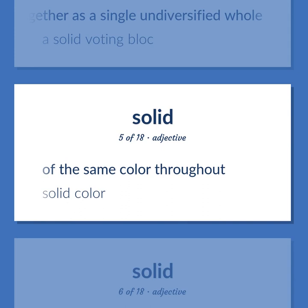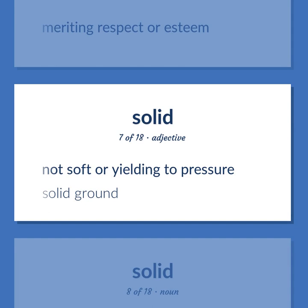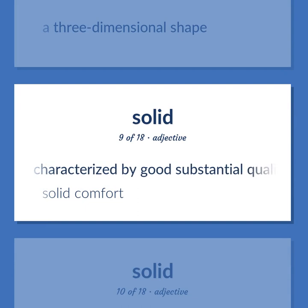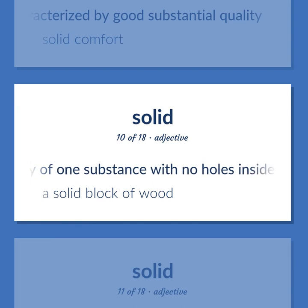Of the same color throughout — solid color. Meriting respect or esteem. Not soft or yielding to pressure — solid ground. A three-dimensional shape. Characterized by good substantial quality — solid comfort. Entirely of one substance with no holes inside — a solid block of wood.